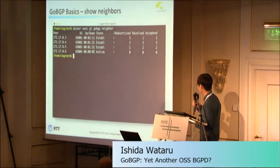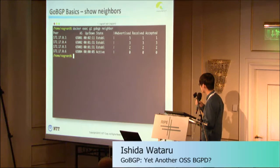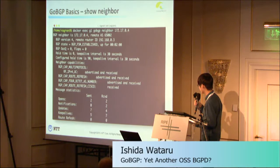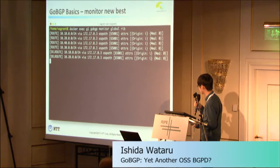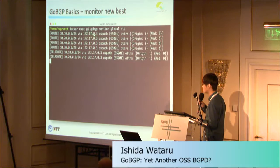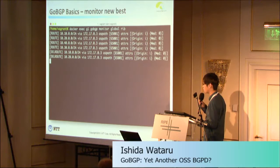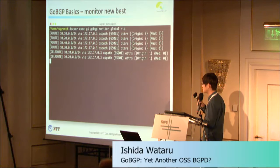The CLI tool looks like this — it shows neighbors and the detail of neighbors, which should look familiar. You can also see the global RIB like this. And this shows what makes gRPC cool: gRPC supports not only get and put, but also notification. This is the GoBGP monitor command. If you type this, you can get notifications from gobgpd when best path has changed or a withdrawal has been received. You can do the same for neighbor status — if the state machine's state changes, you get notified.